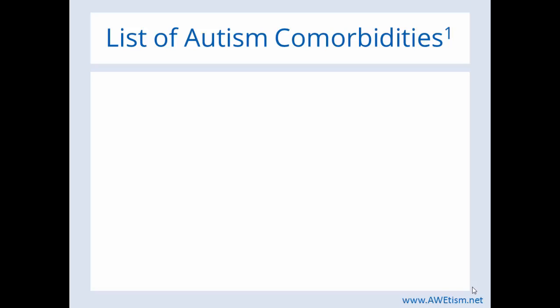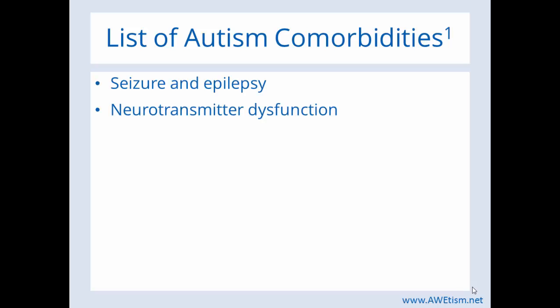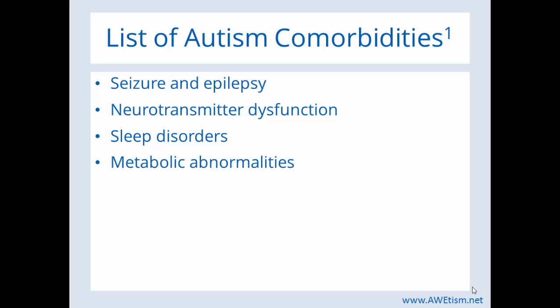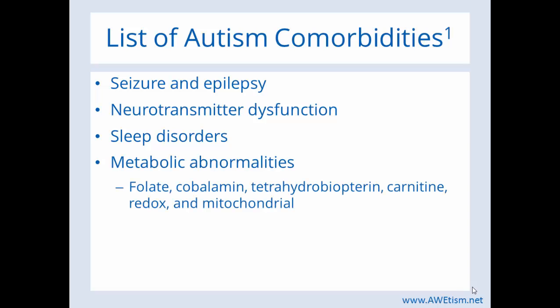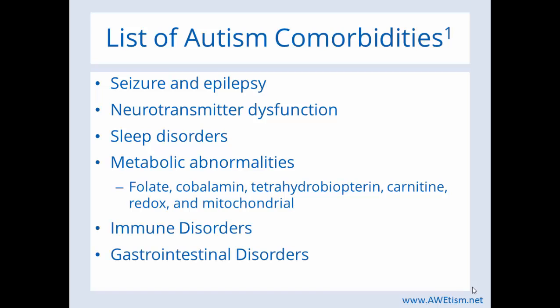Here's a list of autism comorbidities: seizure and epilepsy, neurotransmitter dysfunction, sleep disorders, metabolic abnormalities, immune disorders, and gastrointestinal disorders. Today we're going to focus on seizure and epilepsy, although I have videos that walk you through each one of those comorbidities.